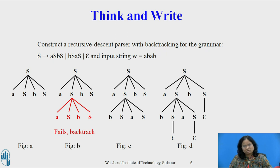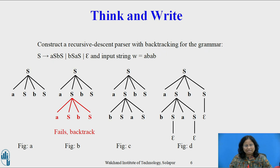To construct a parse tree for this string top-down, we initially create a tree consisting of a single node labeled S. An input pointer points to a, the first symbol of W. We then use the first production for S to expand the tree and obtain the tree of figure A. The leftmost leaf labeled a matches the first symbol of W, so we advance the input pointer to b, the second symbol of W, and consider the next leaf labeled S. We expand S using the first alternative S derives aSbS to obtain the tree of figure B.